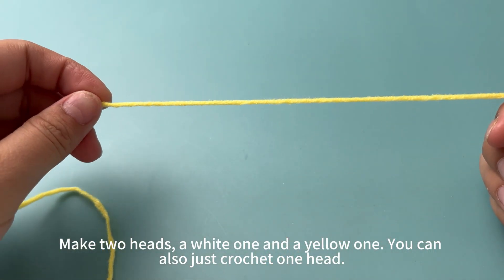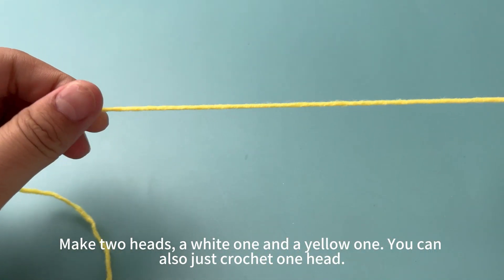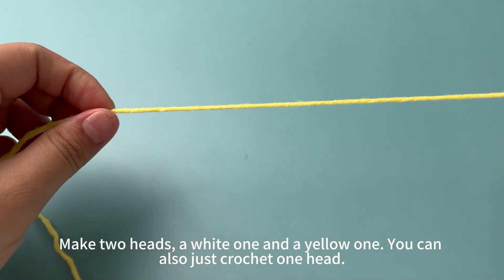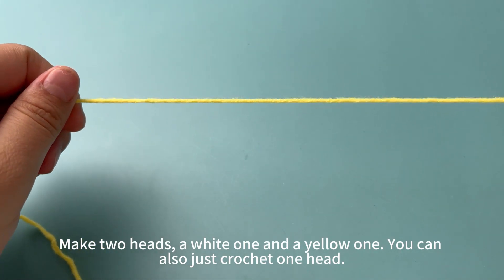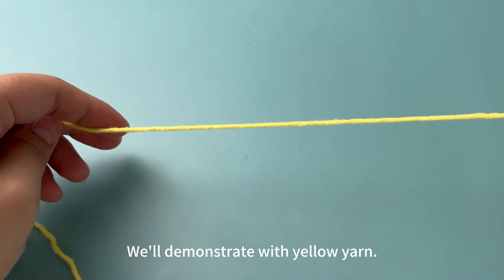Make two heads, a white one and a yellow one. You can also just crochet one head. We will demonstrate with yellow yarn.